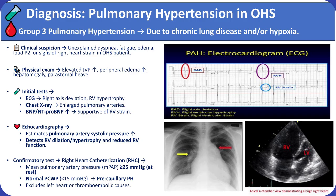Diagnostic evaluation begins with ECG showing right axis deviation and right ventricular hypertrophy, chest x-ray with enlarged pulmonary arteries, and elevated BNP or NT-proBNP indicating right ventricular strain. Echocardiography estimates pulmonary artery pressures and reveals right ventricular dilation or dysfunction. Definitive diagnosis requires right heart catheterization demonstrating a mean pulmonary artery pressure of at least 25 mmHg with a normal pulmonary capillary wedge pressure, confirming precapillary pulmonary hypertension.